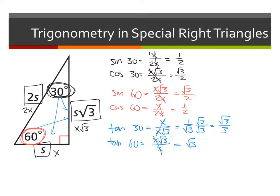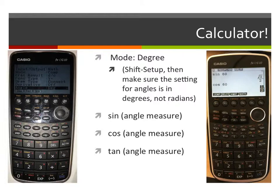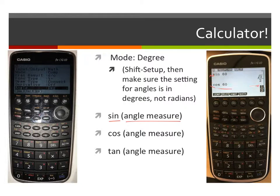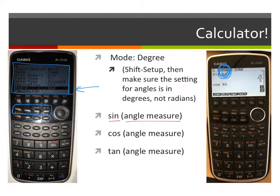Calculating these on the calculator is actually really easy — you just type in sine and then the angle measure. But you have to be careful: you can see the little window says DEG, which means degree, and that has to be the setting. To set it, go to shift setup — press shift then menu — and you'll see a screen with degree at the bottom. Sometimes your calculator will be set to radians. You want it set to degrees before you use your calculator.